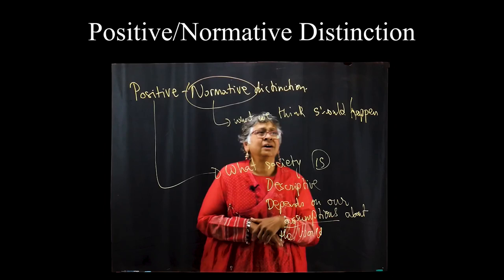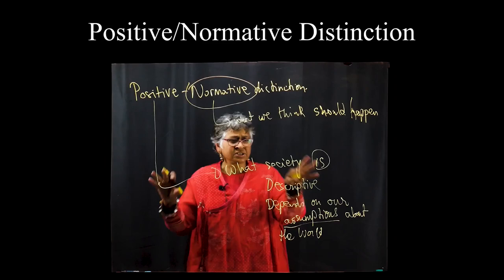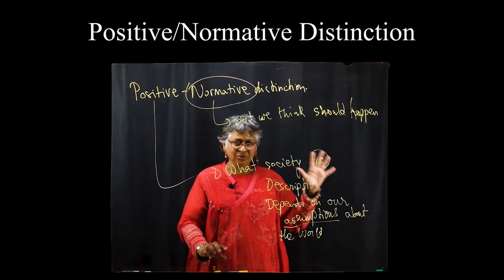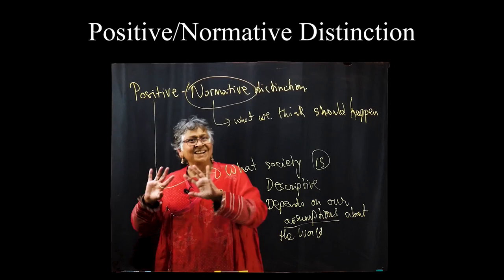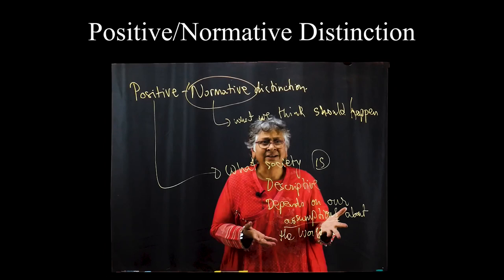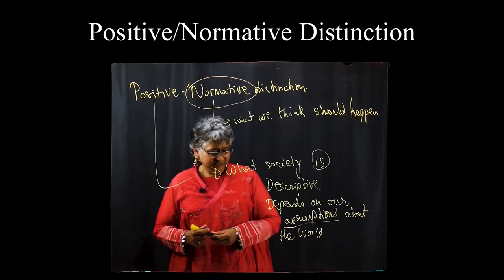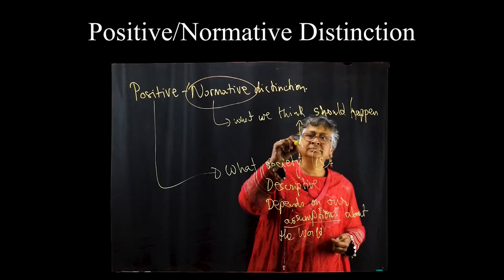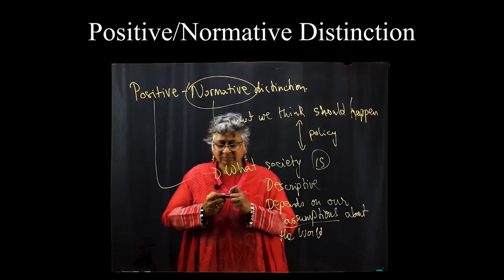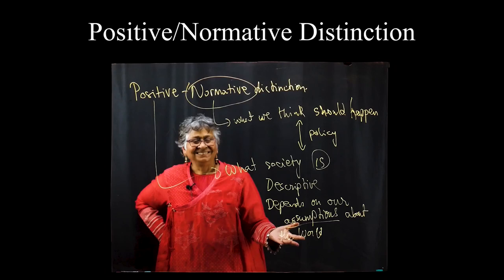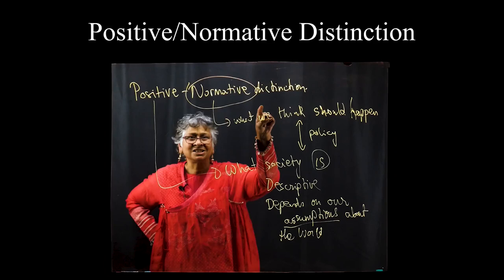We will also do the normative side, which is: okay, you've described society — I'm not sure I like it. Some of you may not like it for left-wing reasons, some of you may not like it for right-wing reasons. That's a different question — that's your values. Do you see what society is like? I would like it to look different. So policy is the art of using what you know about society to figure out what you can do to get us where we want.